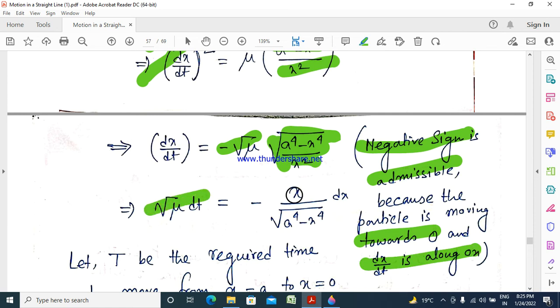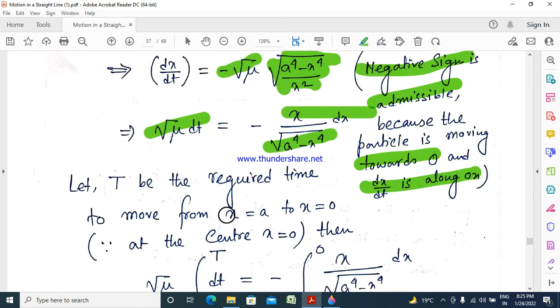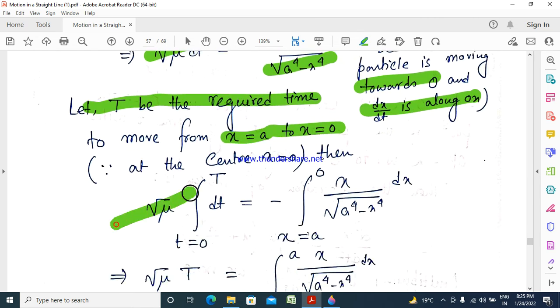Then root mu dt equals minus x dx by root over a to the power 4 minus x to the power 4. We consider x equals a to x equals 0, that is reaching the center, requires time capital T. So root mu T equals integral 0 to T dt. When x equals a, then t is 0, at rest t equals 0. When it reaches the origin, that is the center, x equals 0, then we consider time T. So the limits of integration are set.